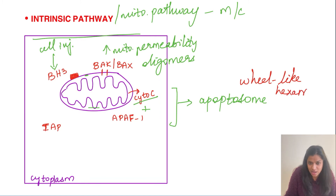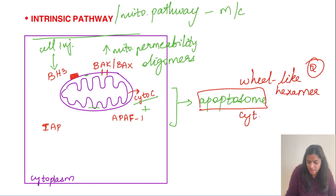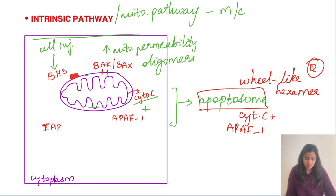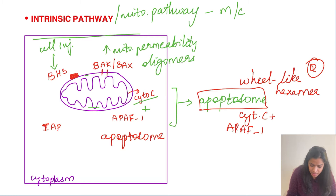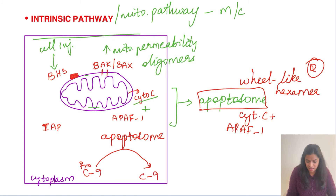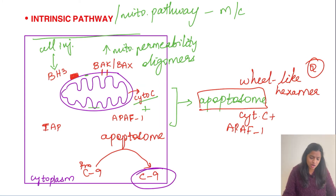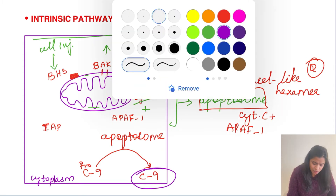The apoptosome has a wheel-like hexamer structure and has been asked in MCQs. To summarize: apoptosome = cytochrome C + Apaf-1. Once the apoptosome is formed, it activates pro-caspase 9 into active caspase 9. Caspase 9 is the final activated enzyme of the intrinsic pathway.